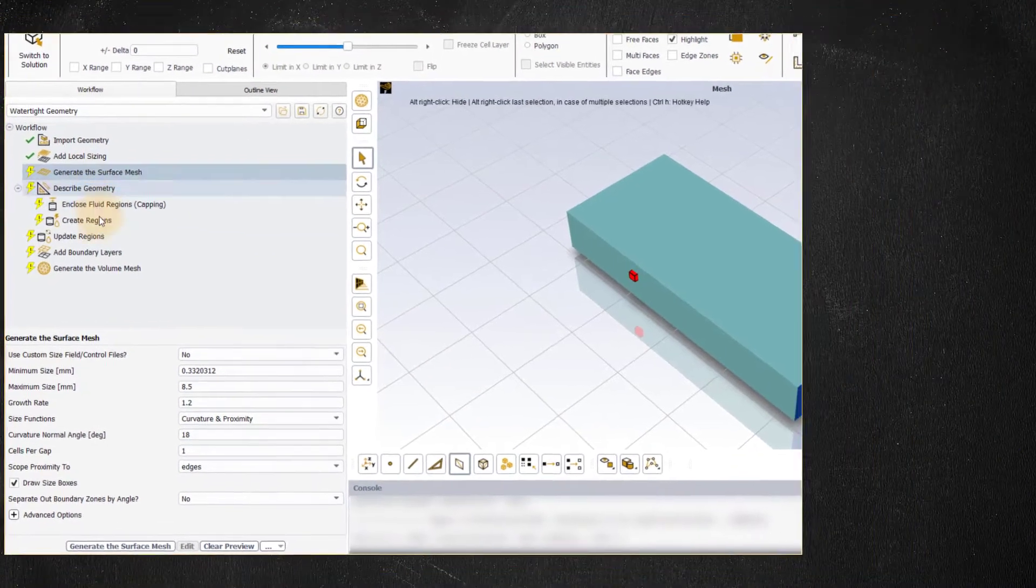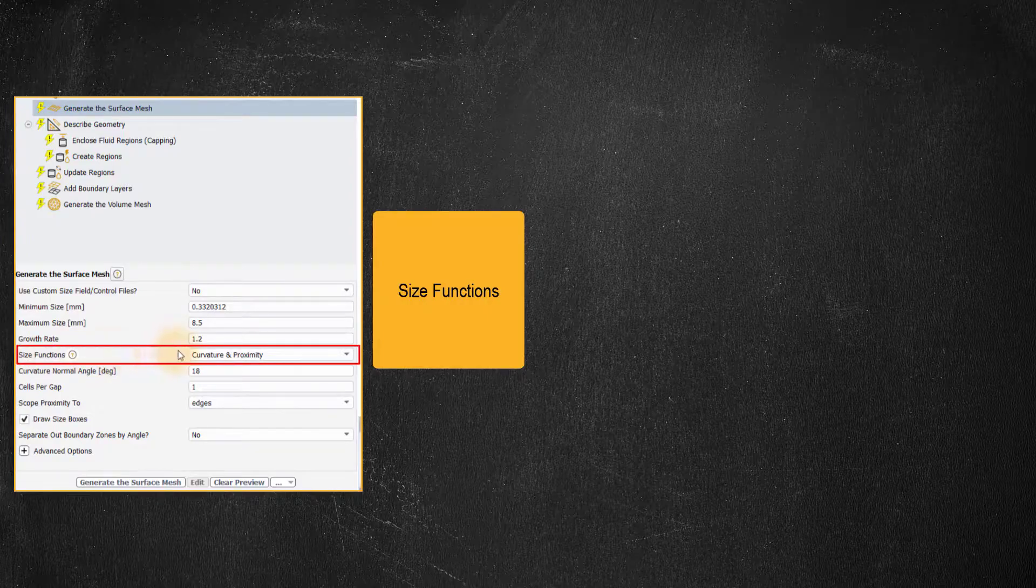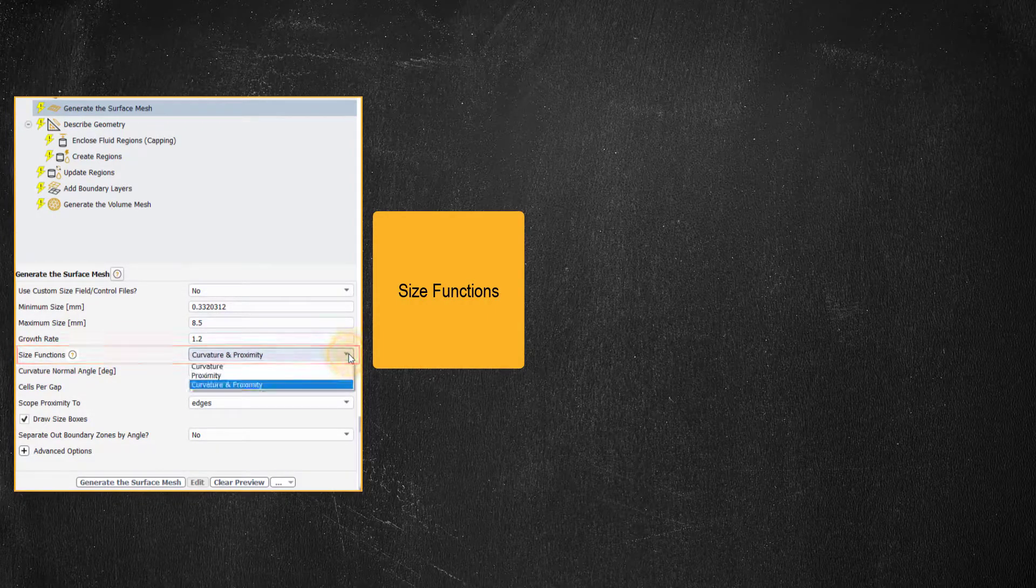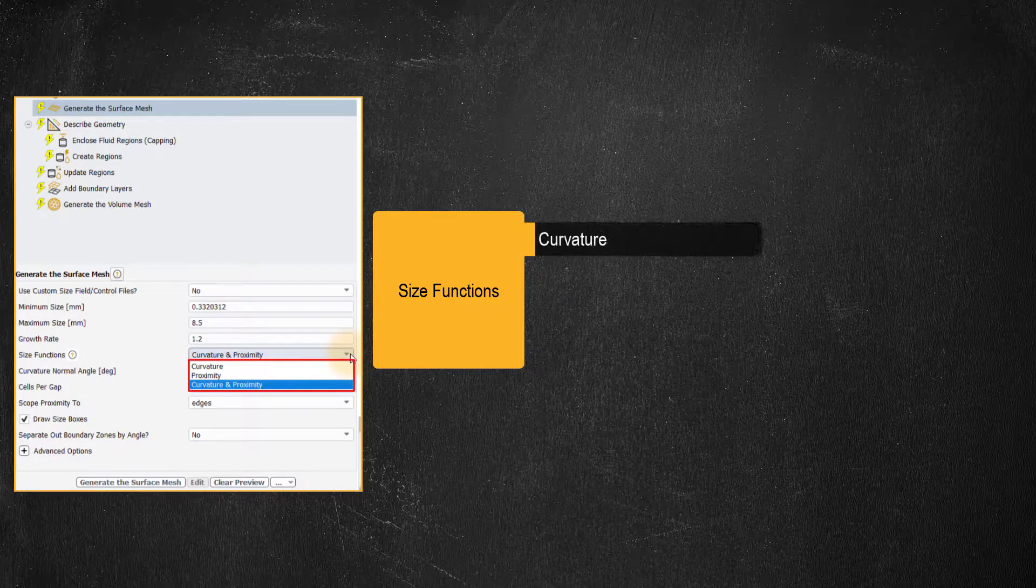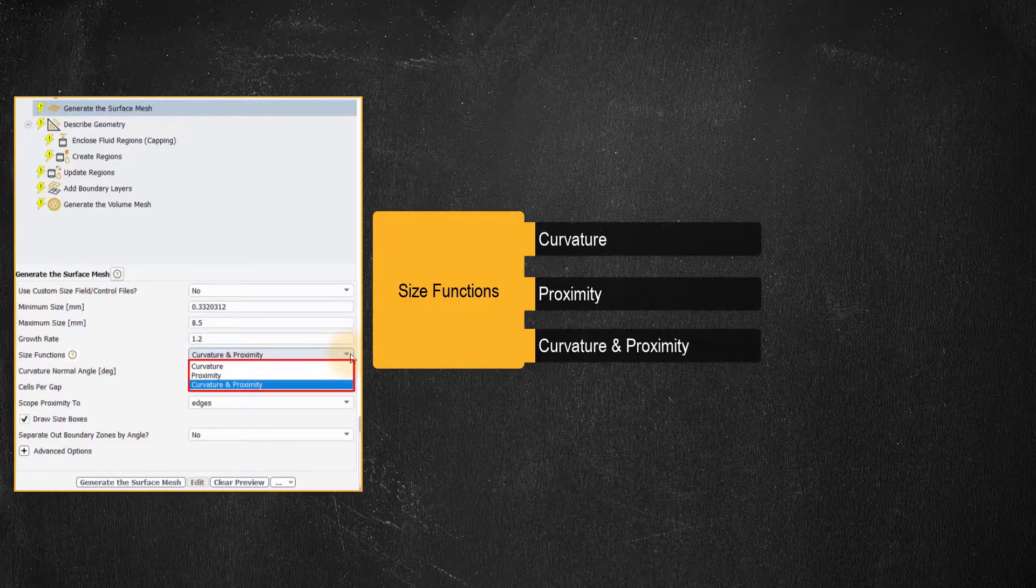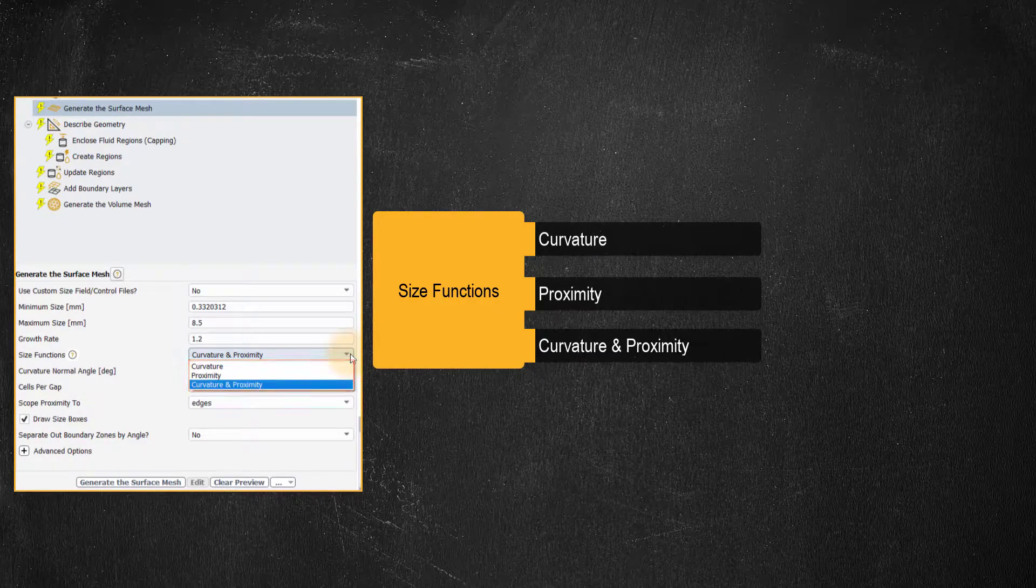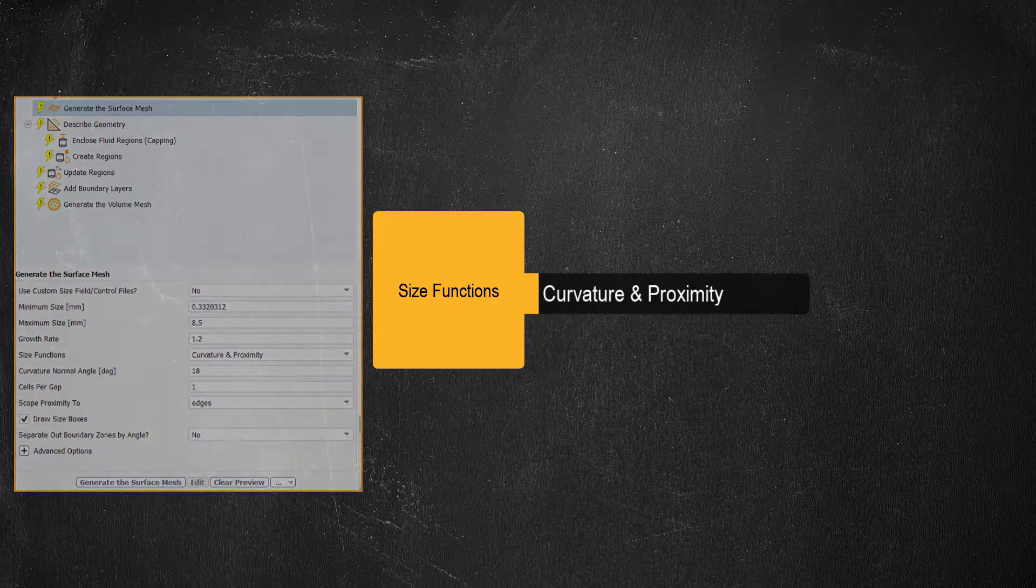We will primarily focus on the size functions input in this task. For this input there are three options: curvature, proximity, and curvature and proximity. For brevity we will directly discuss the curvature and proximity option since it is a combination of the other two options.